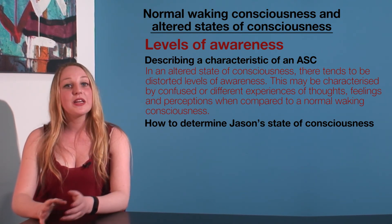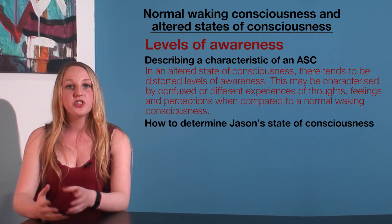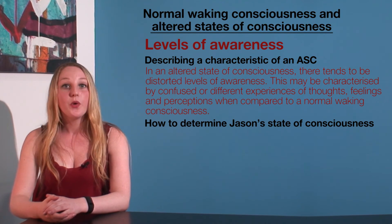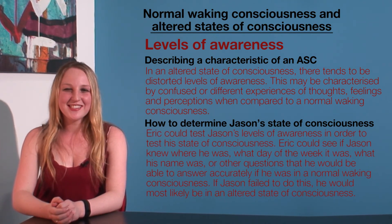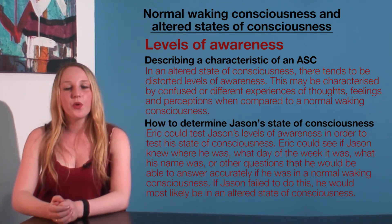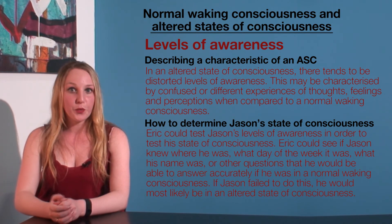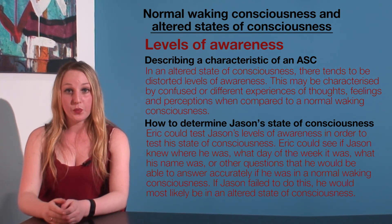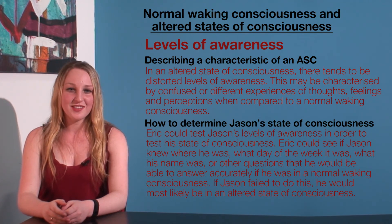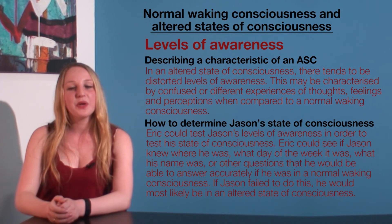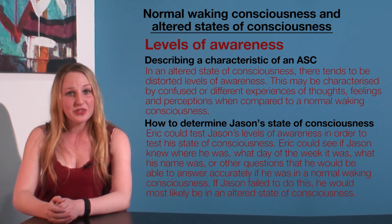For the second mark, we need to explain how Eric could use the levels of awareness to determine Jason's state of consciousness. We could say something like this: Eric could test Jason's levels of awareness in order to determine his state of consciousness. Eric could see if Jason knew where he was, what day of the week it was, what his name was, or other questions that he would be able to answer accurately if he was in a normal waking consciousness.